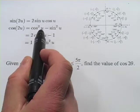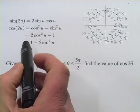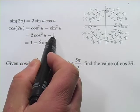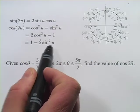is either the cosine squared of that angle minus the sine squared of that angle, or it's 2 times the cosine of that angle minus 1, or it's 1 minus 2 times the sine squared of that angle.